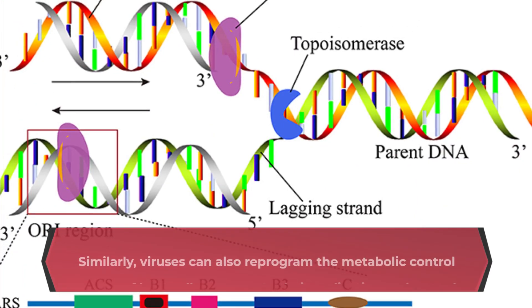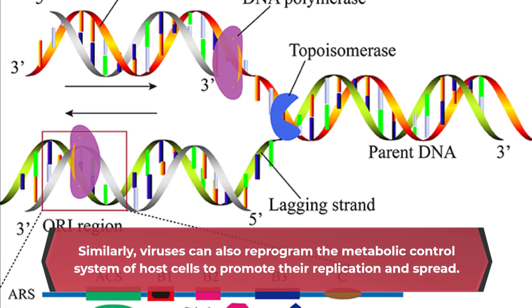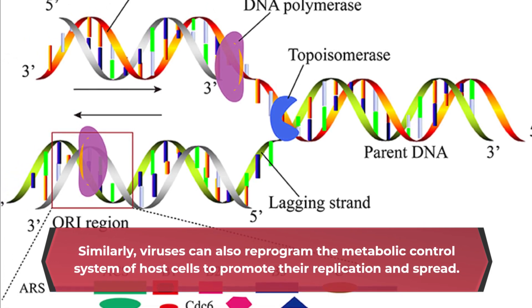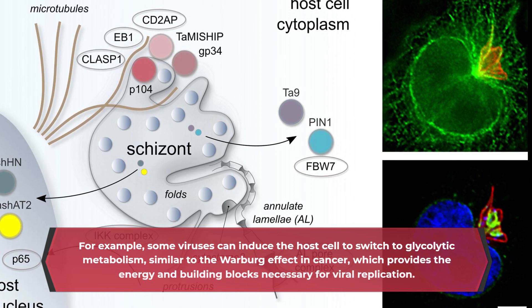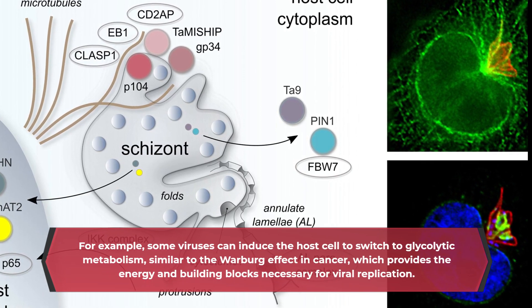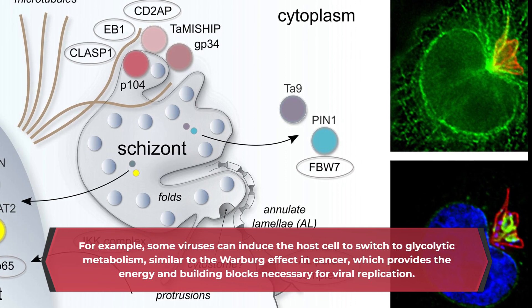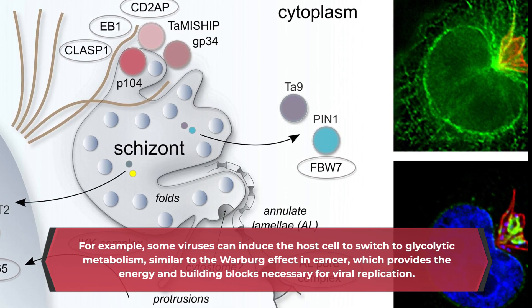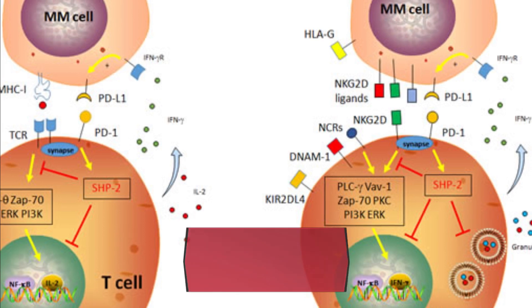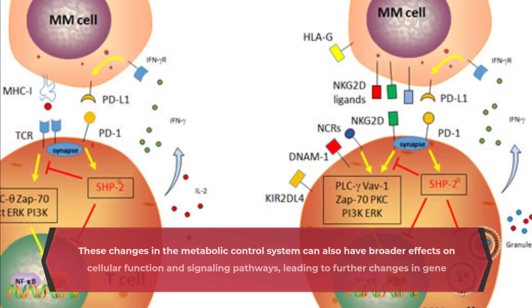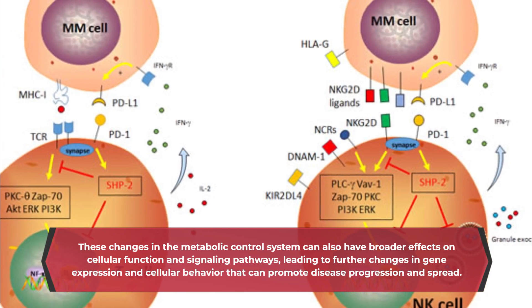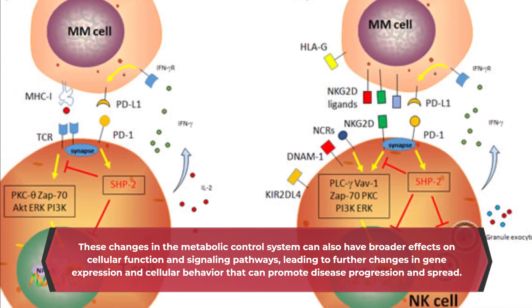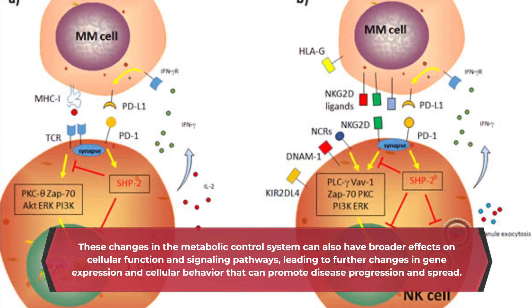Similarly, viruses can also reprogram the metabolic control system of host cells to promote their replication and spread. For example, some viruses can induce the host cell to switch to glycolytic metabolism, similar to the Warburg effect in cancer, which provides the energy and building blocks necessary for viral replication. These changes can also have broader effects on cellular function and signaling pathways, leading to further changes in gene expression and cellular behavior that can promote disease progression and spread.